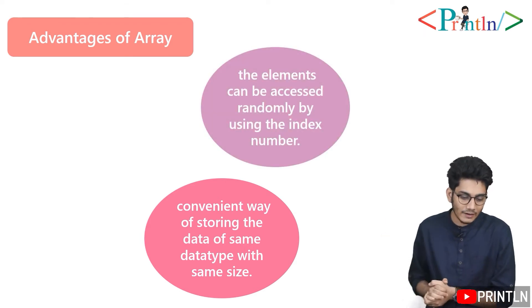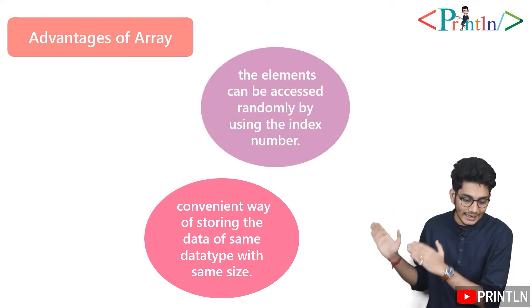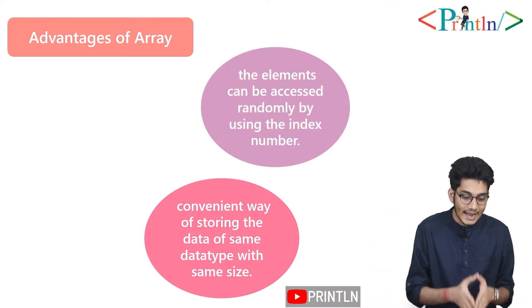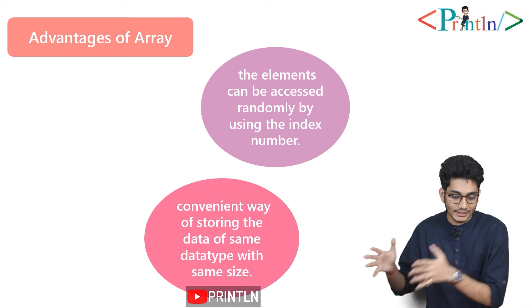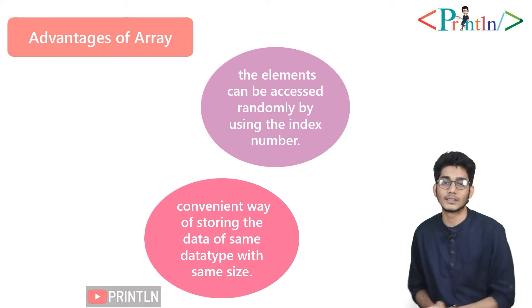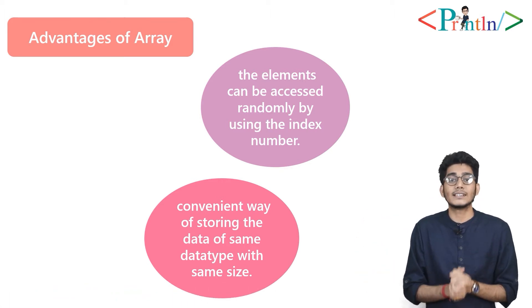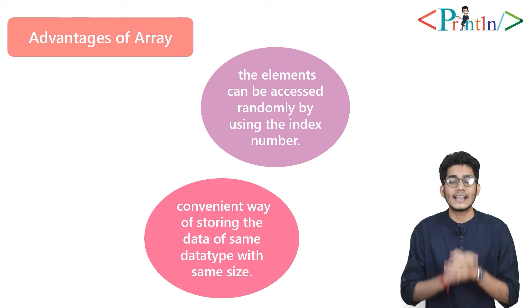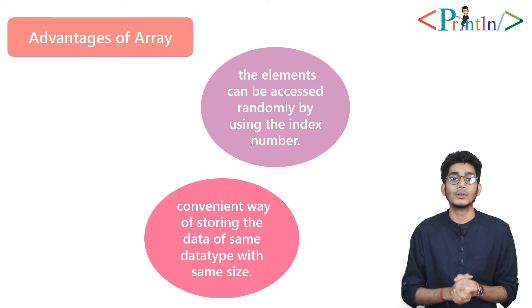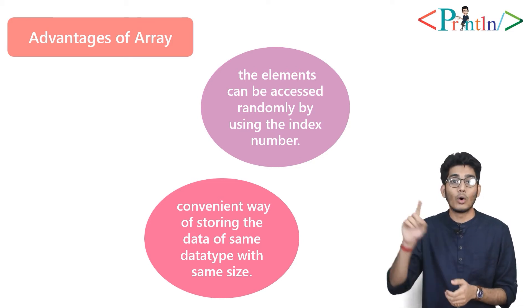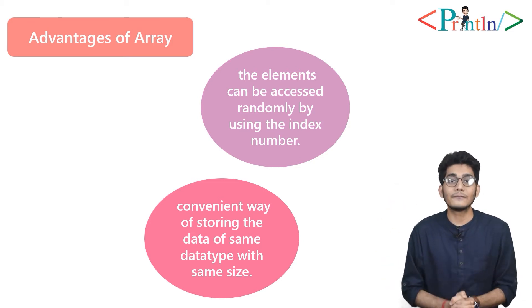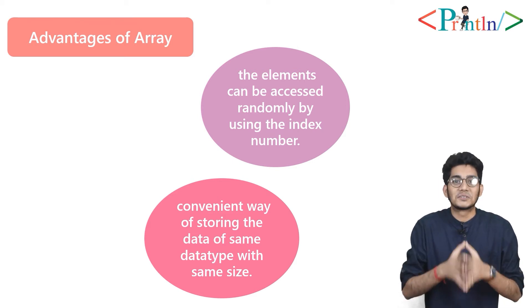The next advantage is that elements can be accessed randomly using the index number. The main advantage of an array is you can search any value at O(1) time if you know the index.